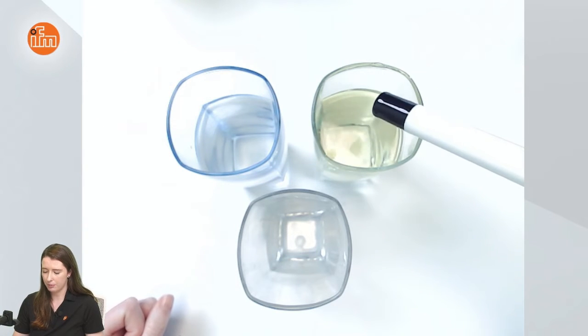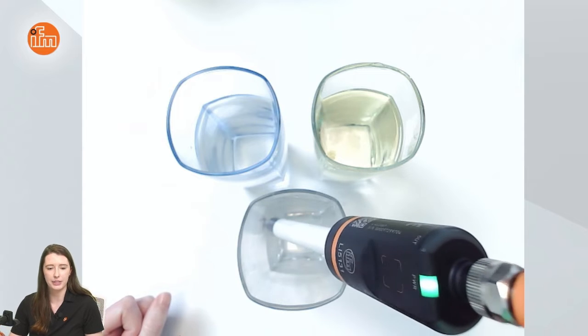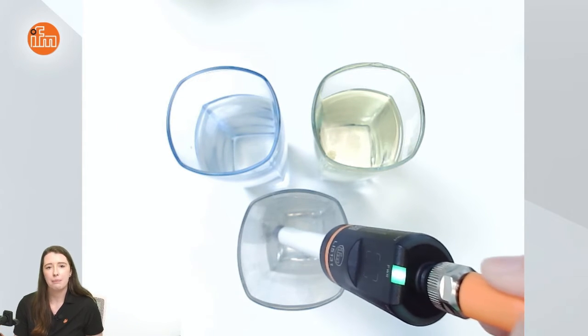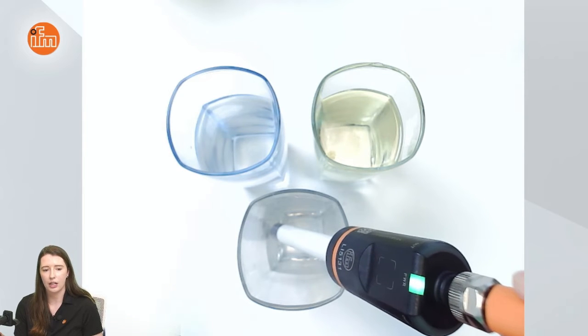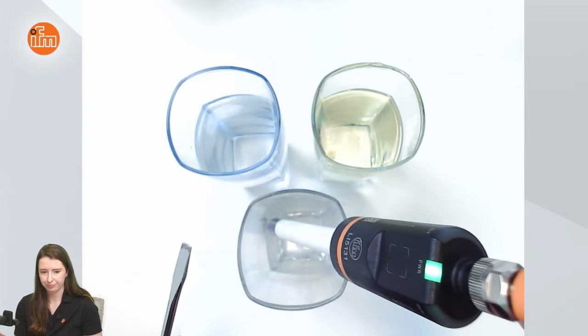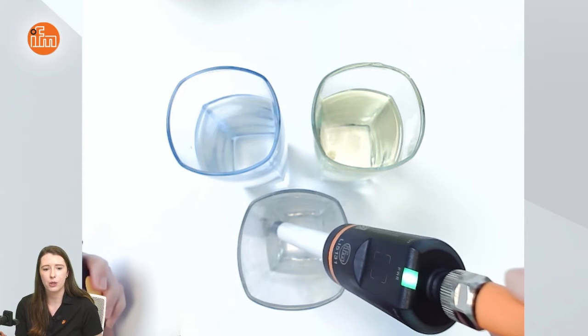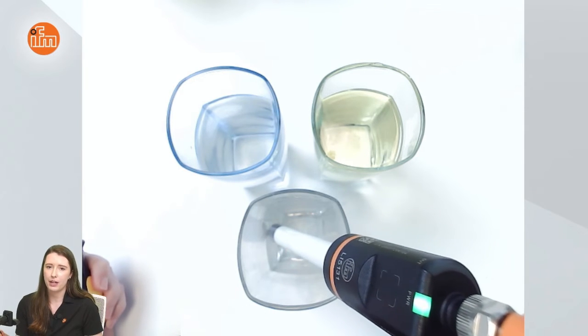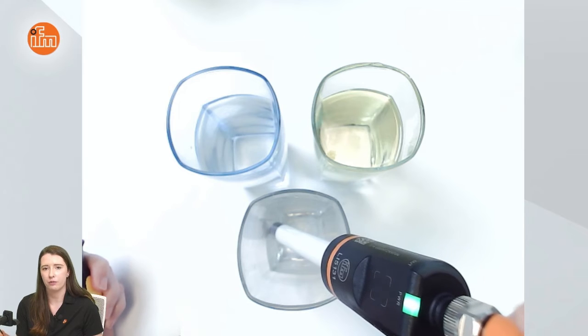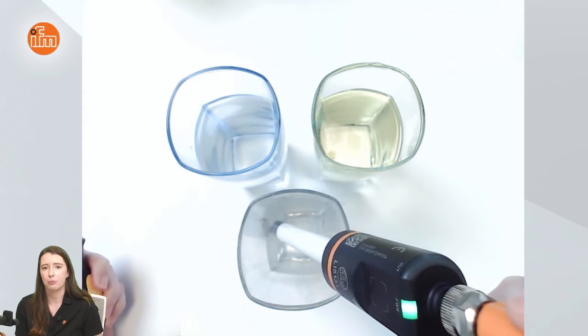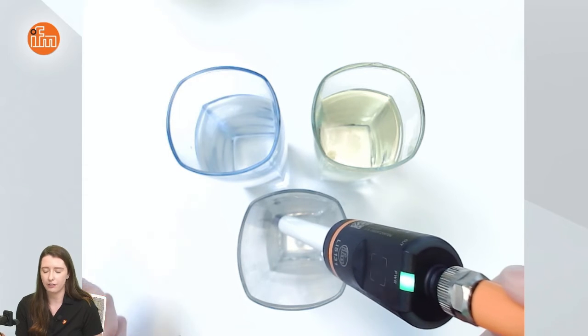So to begin I'm going to put the sensor into the empty glass to perform an empty teach. You need a metal object in order to do this so I'm going to be using a screwdriver. To begin you need to put the sensor into the programming mode and you do this by holding a metal object to the inductive teach button for at least 10 seconds and you will confirm that you are in the programming mode by the green LED flashing twice.